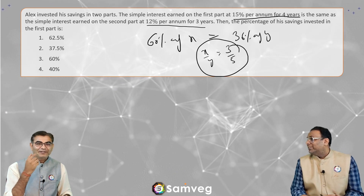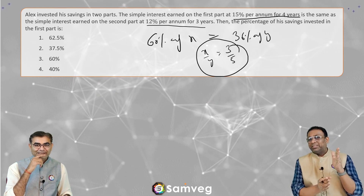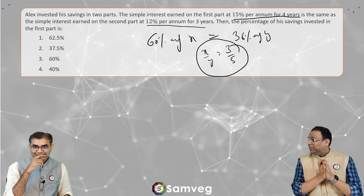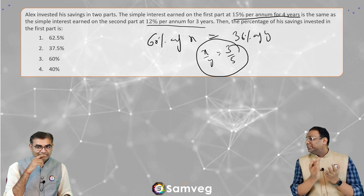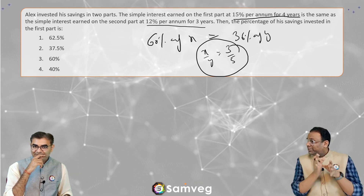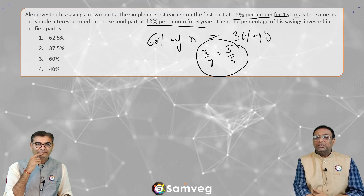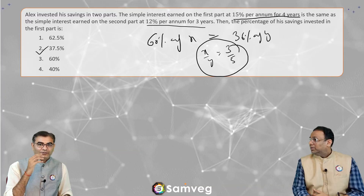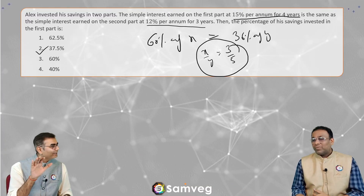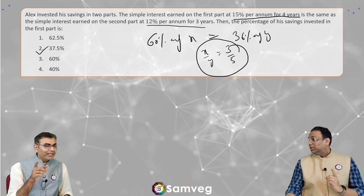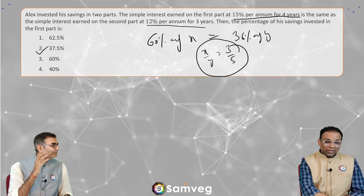Now that we have x by y as 3 by 5, the first saving is 3 and second saving is 5, total is 8. So first part ki saving as a percentage of total saving is 3 by 8, which is 37.5%. We are actually doing the same thing but orally, and it is very easy.